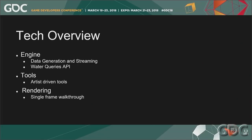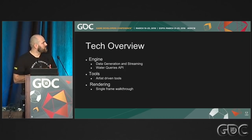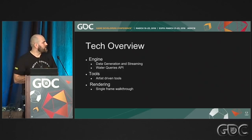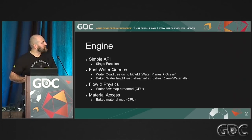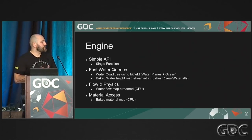In terms of our game engine, there are three sides working together for our water system: the engine side, which handles data generation, streaming, and textures with a simple water queries API; the tools side, which is artist-driven and procedural; and the rendering side. On the engine side, we cleaned up many functions that handled the water level into a single function, dealing with the water quadtree and baked water height maps streamed in for lakes, rivers, and waterfalls. We also support the ocean.